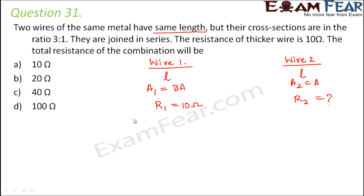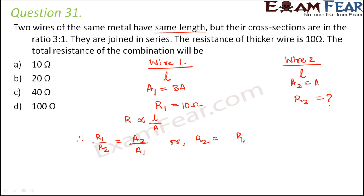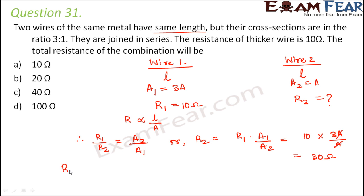R is equal to rho L by A, so R is proportional to L by A. Therefore R1 by R2 will be equal to A2 by A1, since L is equal in both cases and R and A are inversely proportional. So R2 is equal to R1 into A1 by A2. R1 is 10 ohms, A1 is 3A, A2 is A, so A cancels. Therefore R2 equals 30 ohms. The total resistance R total equals R1 plus R2, which is 10 plus 30, equal to 40 ohms.